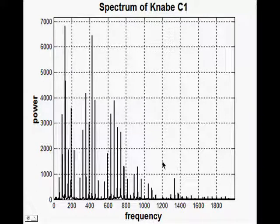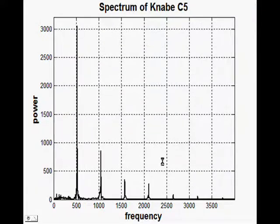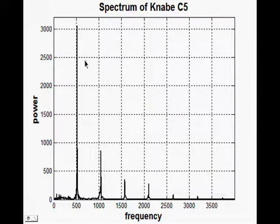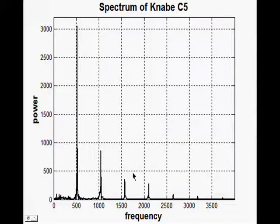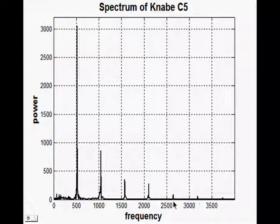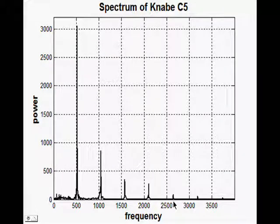And then we can see that it doesn't always occur. Here's a C5 on the same piano. Here's the fundamental at about 527 hertz and there are harmonics. You can notice that the fundamental is strongly represented here. You can also notice that the higher harmonics are weighted relatively inversely to their harmonic number, which we'll see is the recommended way that Arthur Bernard uses.